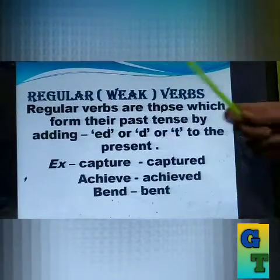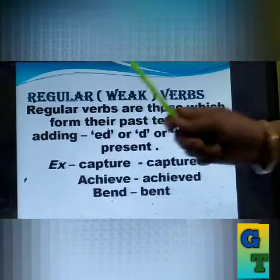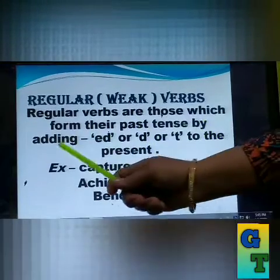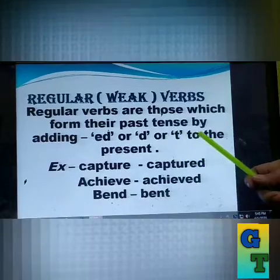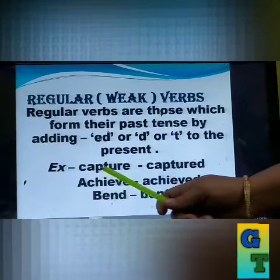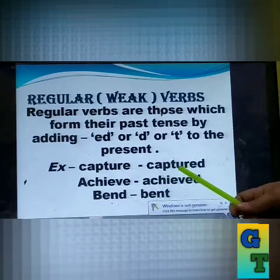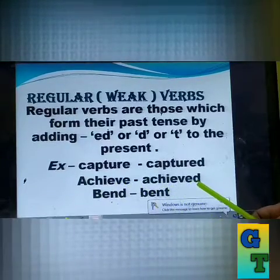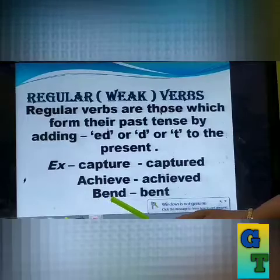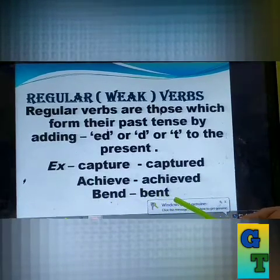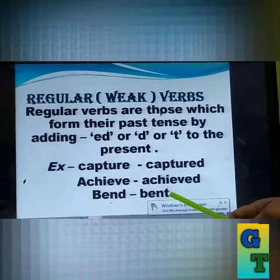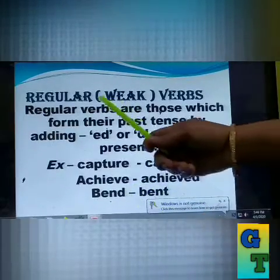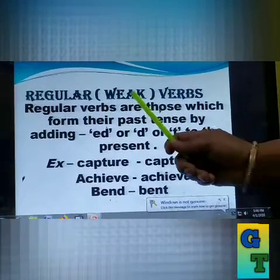Now, what is a regular verb? It is also called a weak verb. Regular verbs are those which form their past tense by adding 'ed', 'd', or 't' to the present. For example, 'capture' becomes 'captured' — that's 'ed'. 'Achieve' becomes 'achieved'. Now see 'bend' — when changed to the past form it becomes 'bent', ending in 't'. So these are the regular verbs, also called weak verbs.